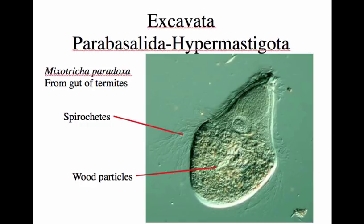When we eat plant material, whatever cellulose is in the plant cell walls passes right through us as dietary fiber. The parabacillate Mixotricha is capable of breaking down cellulose, so either the termite lets the Mixotricha get fat on the cellulose and then the termite digests it, or perhaps the parabacillate releases some of its glucose to the termite in exchange for not getting eaten by the host termite. The Mixotricha uses the bacteria to break down the cellulose, while the termite uses the Mixotricha.